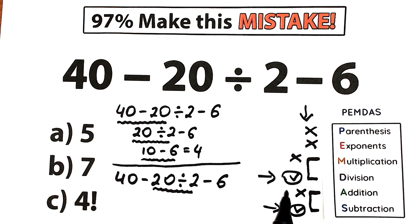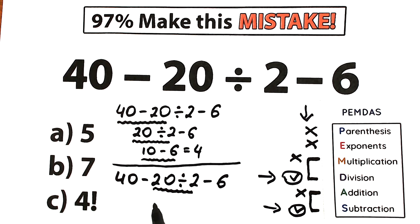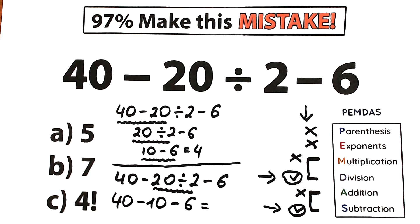Looking closely at PEMDAS, division always comes before subtraction — which is a really important point. So we do the division first: 20 divided by 2 equals 10. Then we handle the subtraction. We complete the division part and compute 40 minus 10 minus 6, which gives us 30 minus 6, and we get 24.